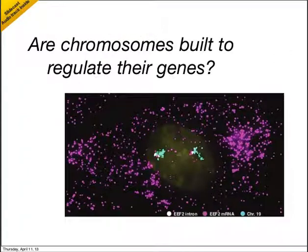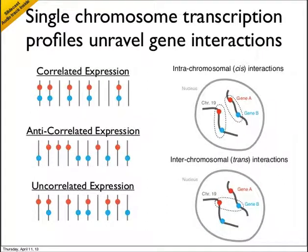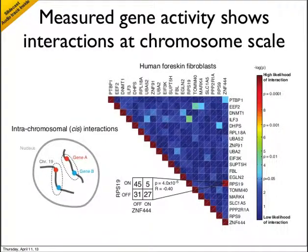This chromosome-specific behavior led us to wonder what other ways transcription is regulated by the organization of genes along a chromosome. One idea we explored is whether genes from the same chromosome are correlated in their transcriptional activity. For example, for genes A and B, the different scenarios include correlated expression — where genes A and B turn on and off together — anti-correlated expression, where when gene A is on, gene B is most likely off and vice versa, and uncorrelated expression, where given that gene A is on, we can't predict anything about the expression of B. What's unique about the ICEFISH assay is that we can make these measurements on the single chromosome level, where two genes on the same chromosome display a cis interaction, and two genes across chromosome copies display a trans interaction. We display this data as the likelihood of interaction for all pairs of genes tested in the ICEFISH assay.